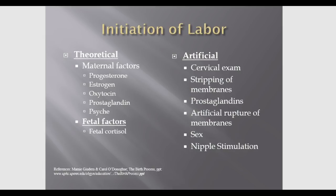Let's talk about artificial ways to cause labor. On cervical exam, we can strip the membranes — irritating the membranes to encourage the amniotic sac to rupture. We can administer prostaglandin gel or a suppository vaginally to soften the cervix, called ripening the cervix. We can also artificially rupture the membranes using a device that looks like a crochet hook to snag the amniotic sac. Sexual intercourse introduces prostaglandins, which can soften the cervix, and nipple stimulation causes the release of oxytocin.